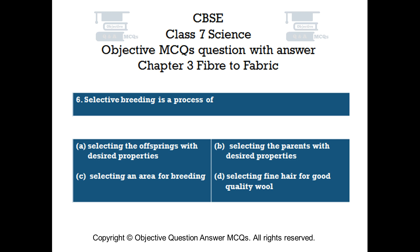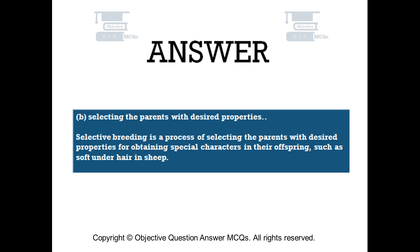The right answer is Option B — Selecting the parents with desired properties. Selective breeding is a process of selecting the parents with desired properties for obtaining special characters in their offspring, such as soft under-hair in sheep.